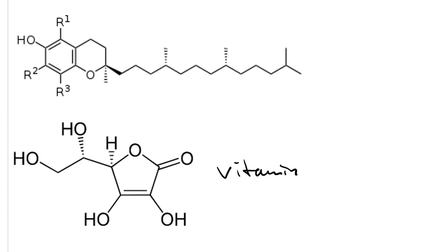Vitamin C and vitamin E are the body's analogs. When these can counter free radicals in the body, they destroy them, creating a stable radical, thus preserving health.